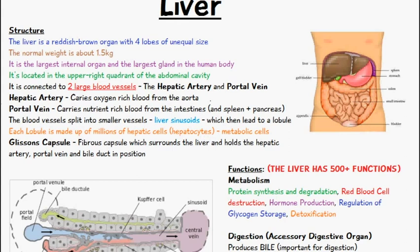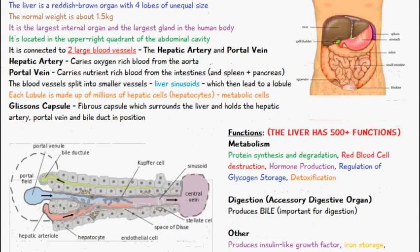We also have something called Glisson's capsule, which is the fibrous capsule that surrounds the liver and holds the hepatic artery, the portal vein, and the bile duct in position.